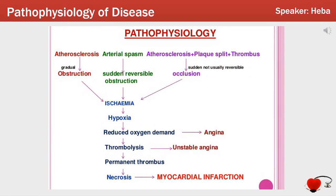Moving on to the pathophysiology of the disease, myocardial infarction is caused by the occlusion of one or multiple large epicardial coronary arteries that last for more than 40 minutes. The occlusion itself is caused by a plaque that has split and ruptured. This leads to lack of blood supply and oxygen supply, causing irreversible structural and myocardial changes to myocardium tissue.